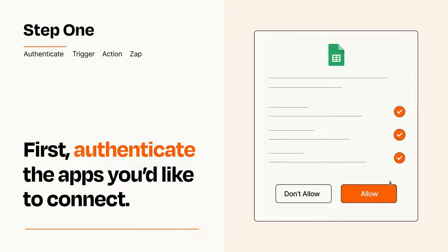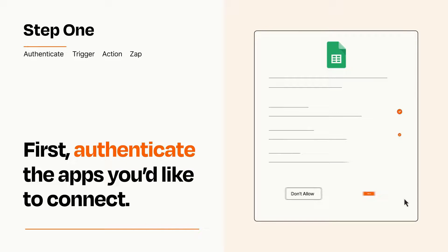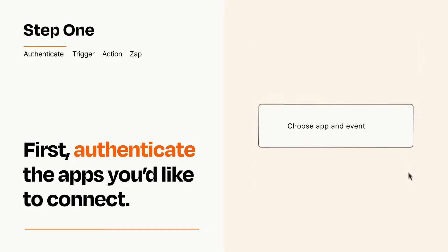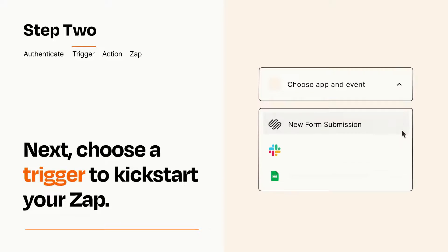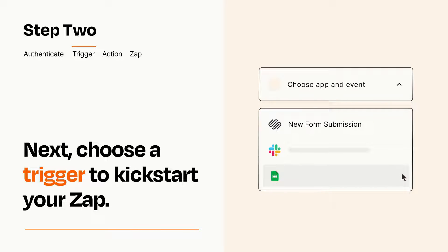Zapier meets industry standards for encryption when connecting with each of your apps. Now let's set up your trigger, which is the event that starts your Zap. Pick the trigger event that you want from the list.